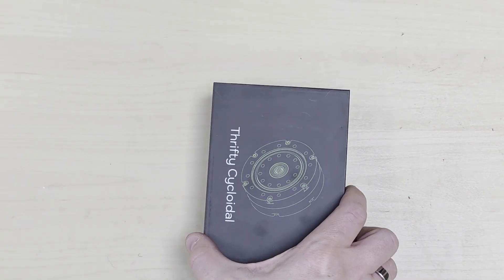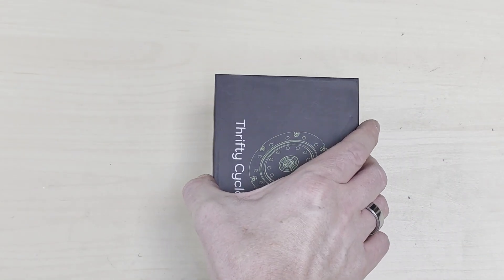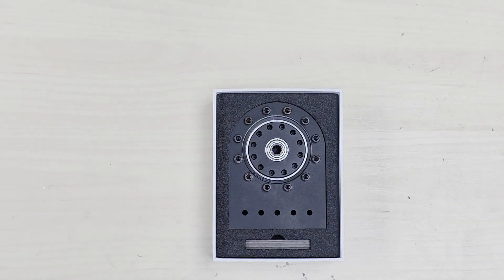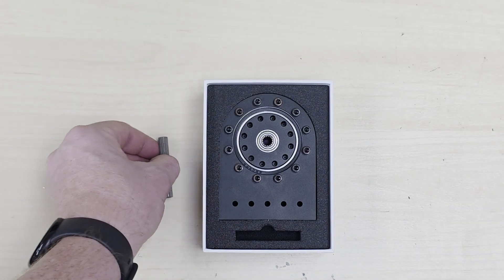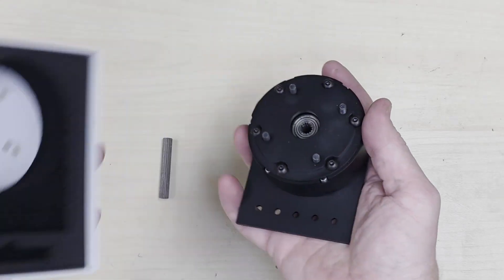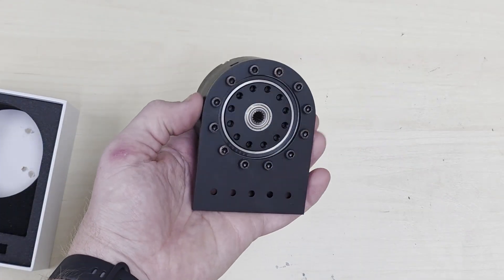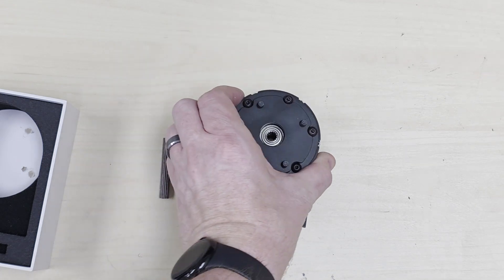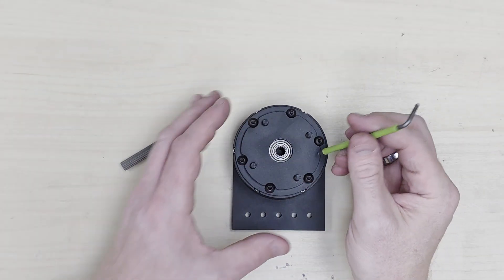The first step for assembling the cycloidal arm joint kit is opening the Thrifty Cycloidal box. Inside, we'll have a two-inch stub shaft and the cycloidal gearbox, along with the motor mount plate and the face mount plate.